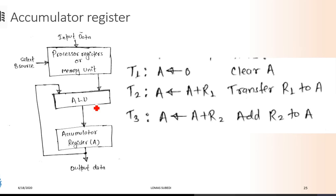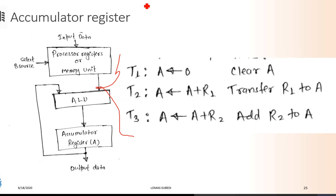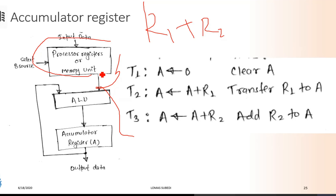It will be accumulated in this variable group. This is RTL — Registered Transfer Language. This is T1, T2, T3 — this is a micro operation. This is the instance and the time. This is the R1 plus R2 operation. This is R1 plus R2 in this section.